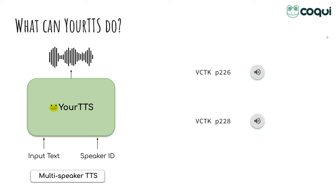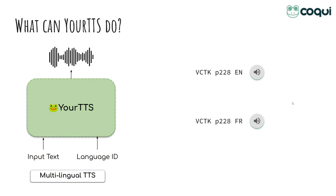Here's what it sounds like when you feed the same sentence into the model for two different speakers. [Audio demo: 'When the sunlight strikes raindrops in the air, they act as a prism and form a rainbow.' — played twice in different voices.] So, let's move on to multilingual models.